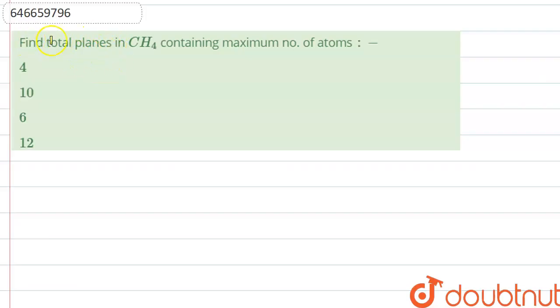So we have to find how many planes are there in CH4 which contain maximum number of atoms. The structure of CH4, we all know, is tetrahedral.